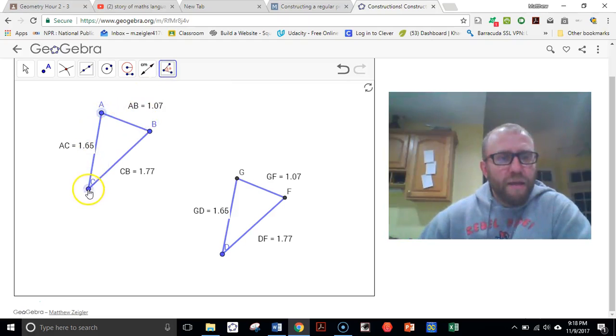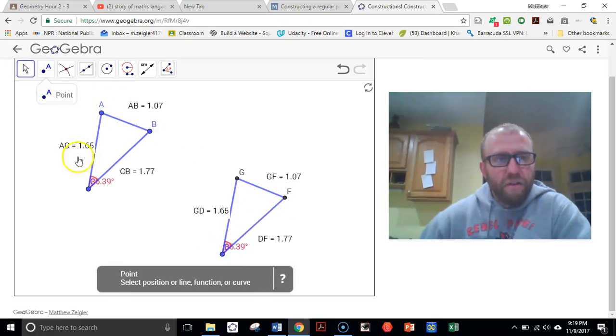So we've got ACB. And GDF. So let's take a look. I've got 36.39. 36.39. So far, so good.